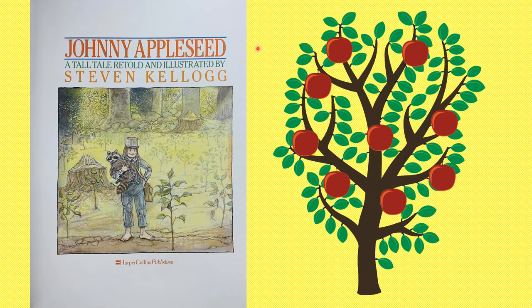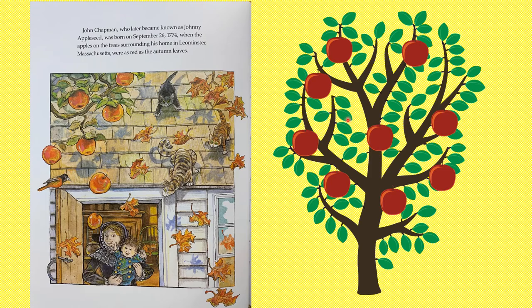Let's begin reading the story: Johnny Appleseed, a tall tale retold and illustrated by Stephen Kellogg. John Chapman, who later became known as Johnny Appleseed, was born on September 26, 1774, when the apples on the trees surrounding his home in Leominster, Massachusetts were as red as the autumn leaves.